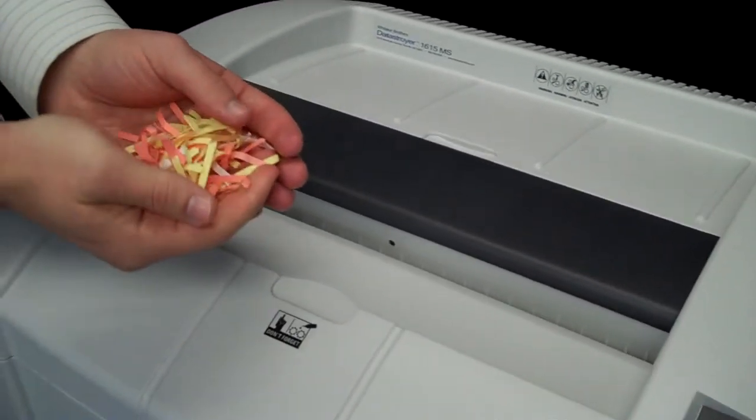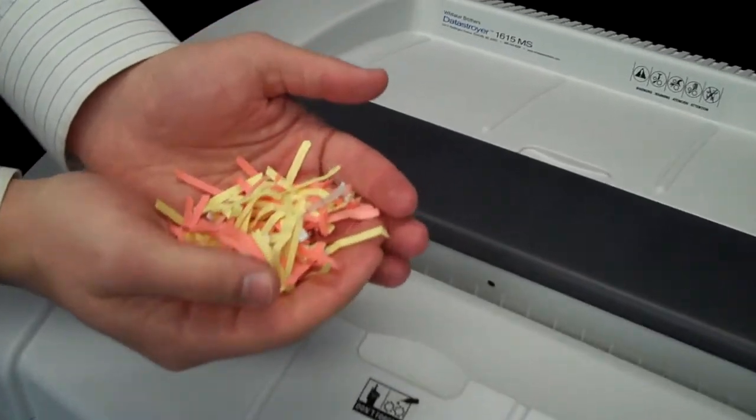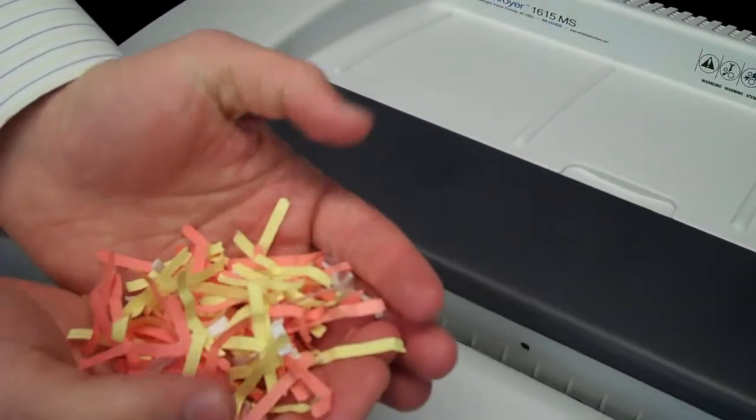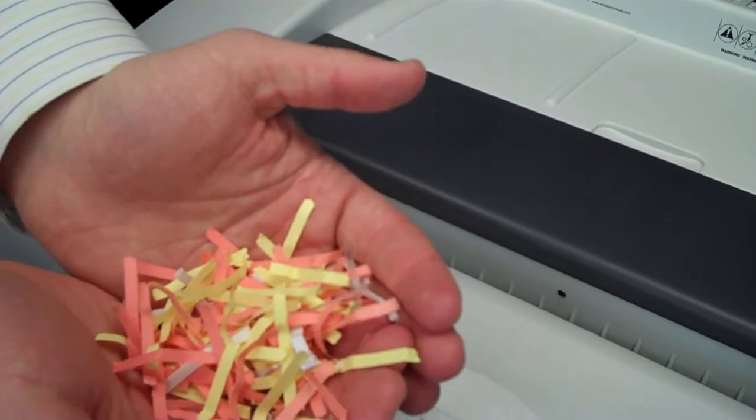I'll give you a look at what some of the residue looks like. This is cross cut, a solid level 3. This is what you can expect out of the DayDestroyer Model 1615 Cross Cut.